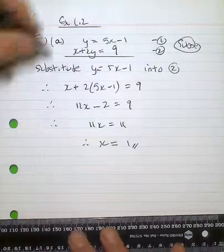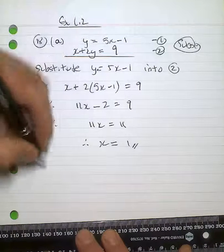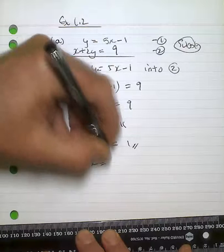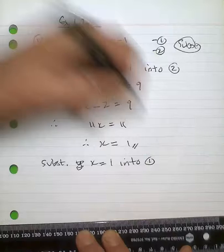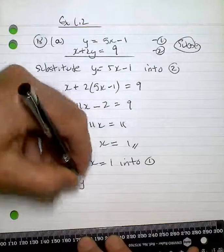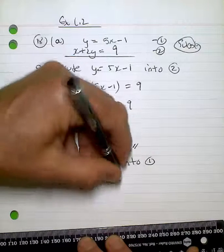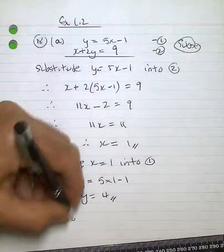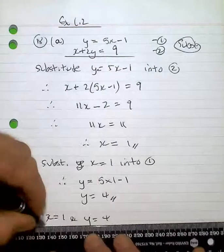To find what y is, I'm going to substitute x = 1 into equation 1. That becomes y = 5(1) - 1. y = 4. My answer: x = 1 and y = 4.